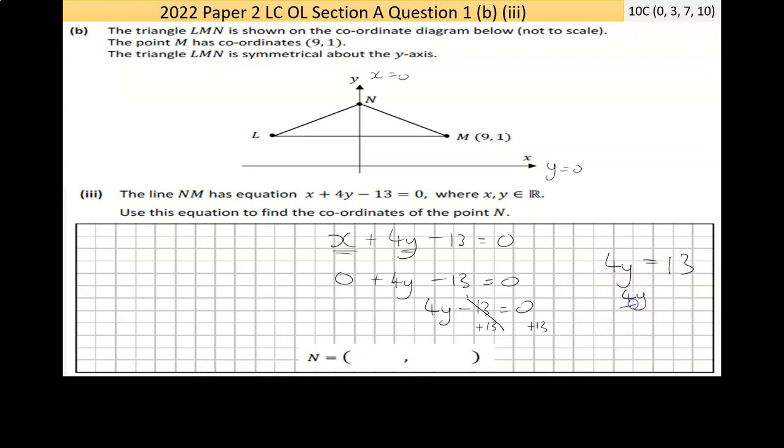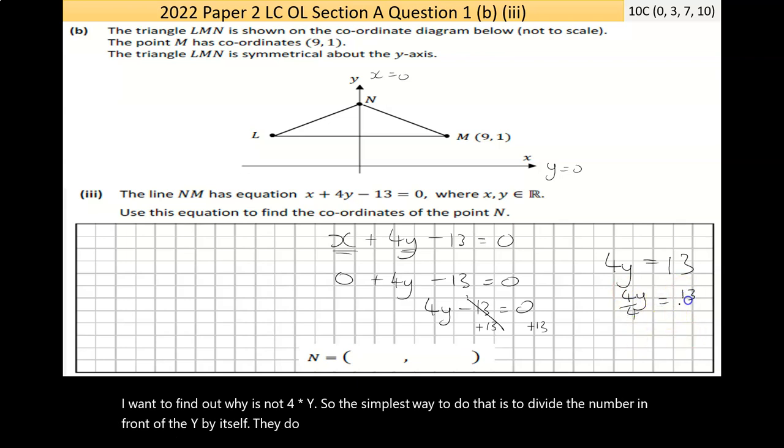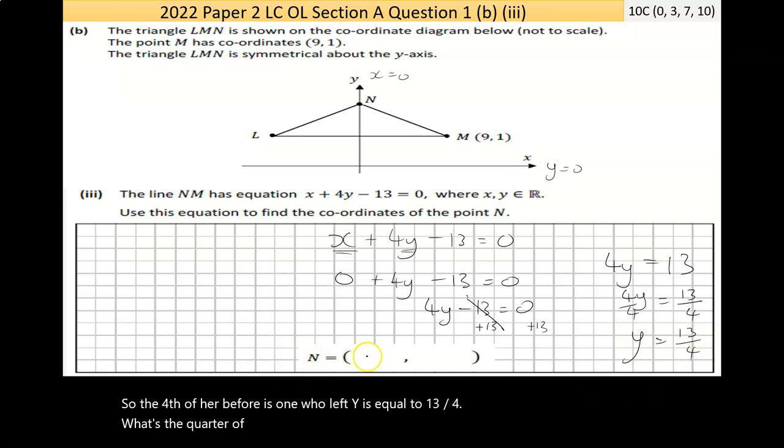Now, I want to find where y is, not 4 times y. So, the simplest way to do that is to divide the number in front of the y by itself. If I do it to one side, I have to do it to everything on the far side. So, the 4 divided by 4 is 1. You'll have y is equal to 13 over 4.